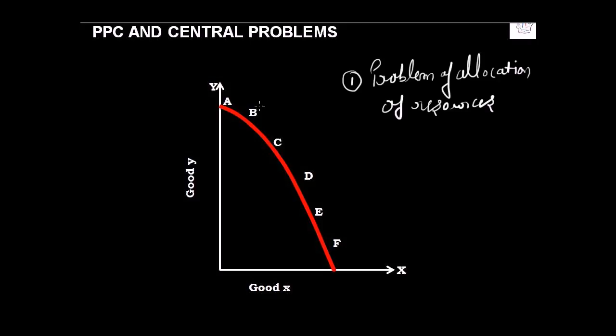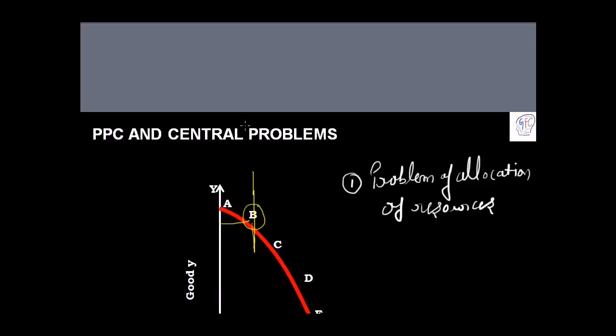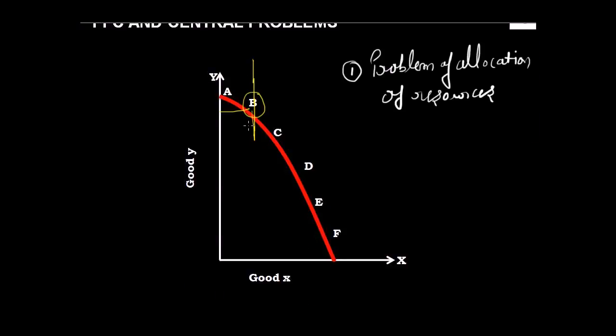For example, if the economy operates at combination B, you will get more units of good Y compared to good X. Why is this happening? It's simply because of the way it has been plotted. At point B, Y would be more and good X would be less. This is a simple allocation of resources showing how resources are allocated.